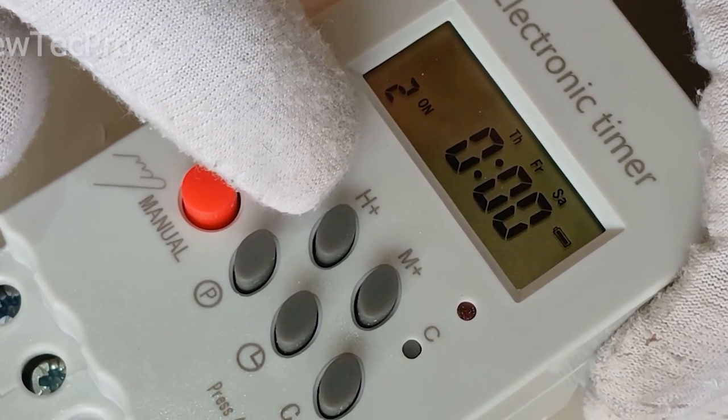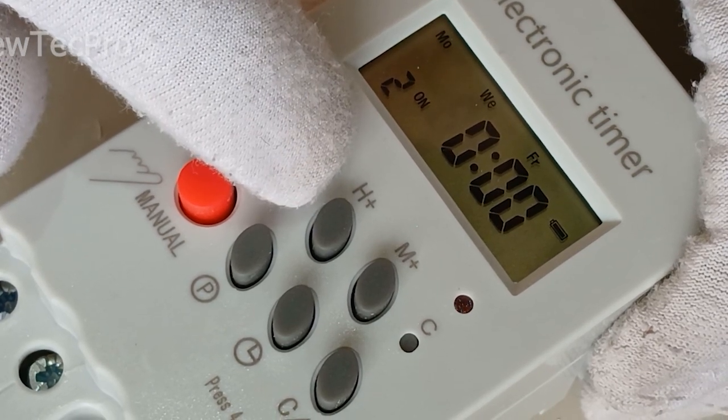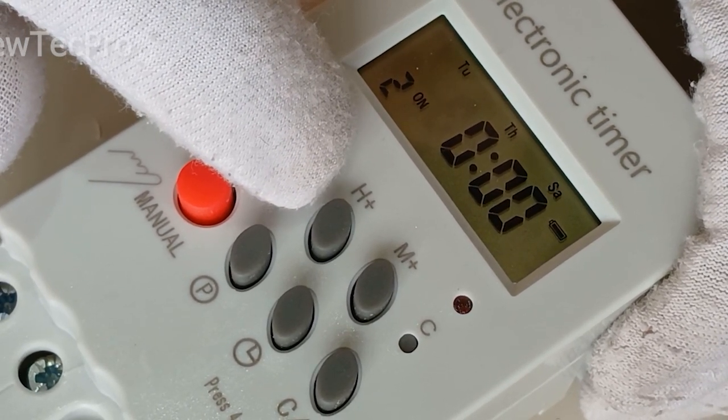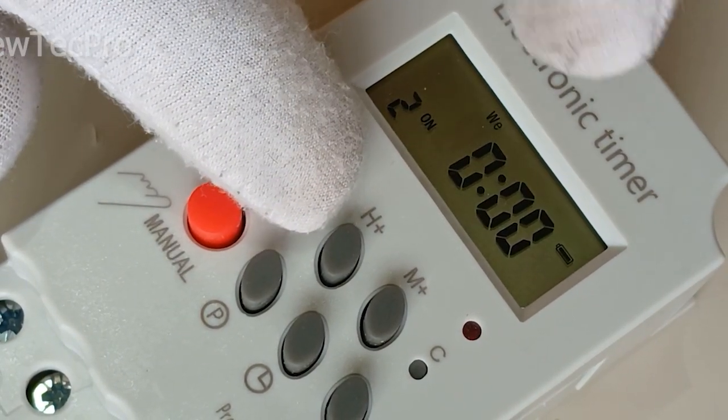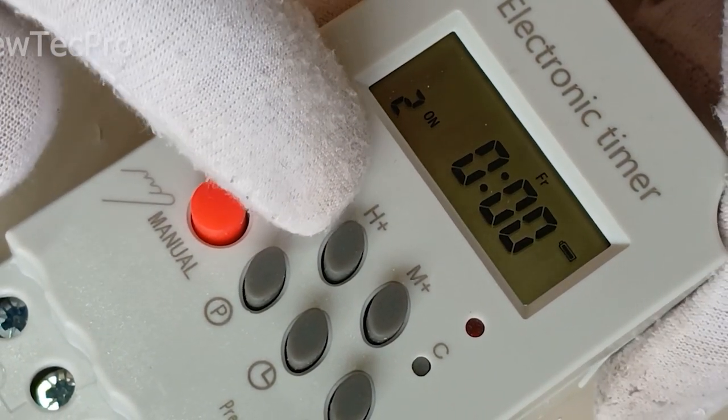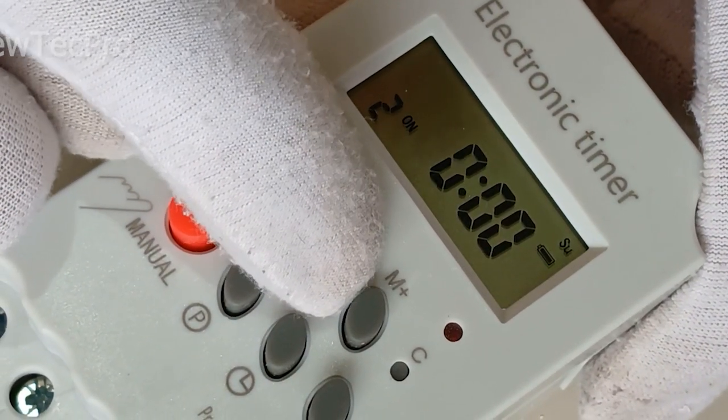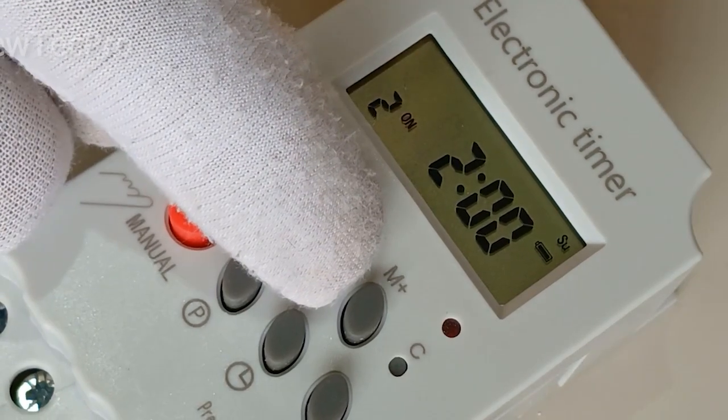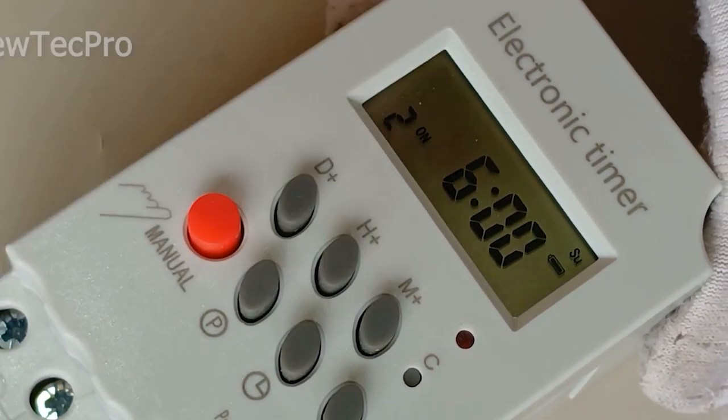We want the timer to turn on at six o'clock and turn off at eight o'clock. Set the Sunday here, Sunday SU, and on six o'clock, H plus six.